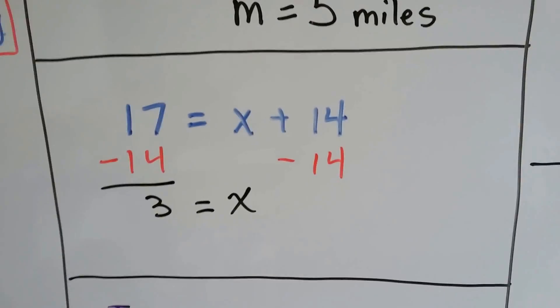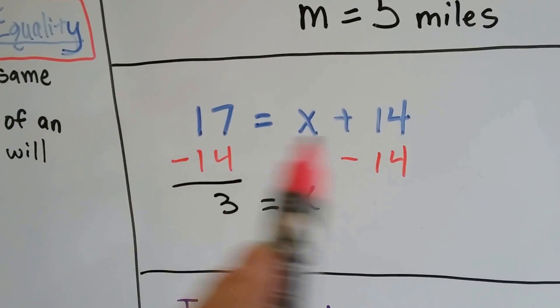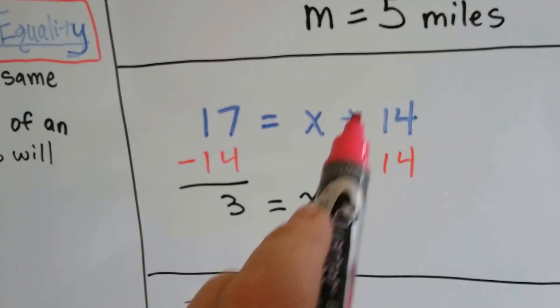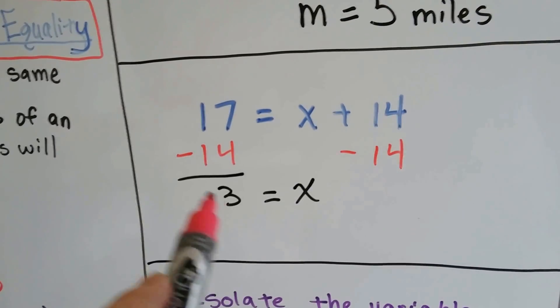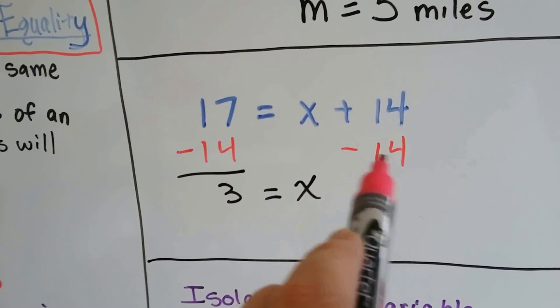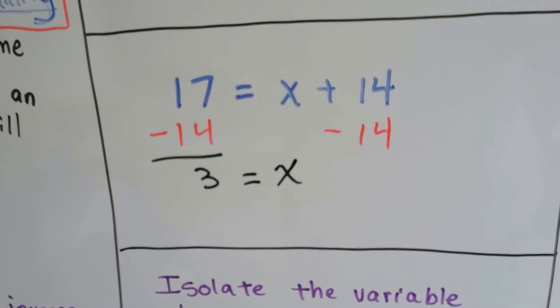17 is equal to x plus 14. So we're going to take away 14 from each side to isolate the x. We're going to get rid of this plus 14 by getting a minus 14. This becomes a 0, and this becomes a 3, and we see 3 is equal to x. x equals 3.